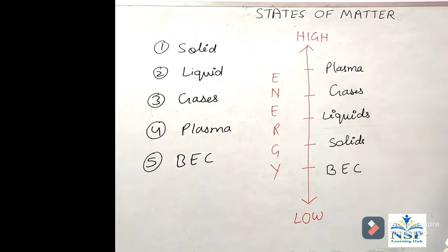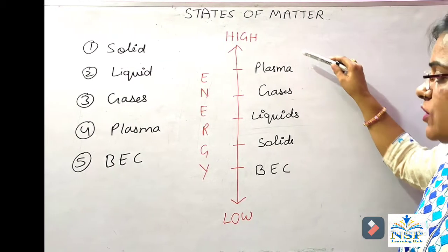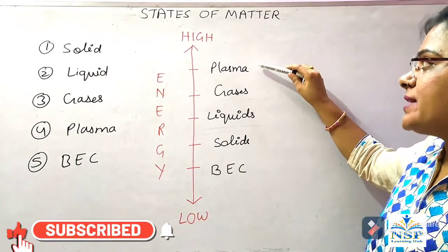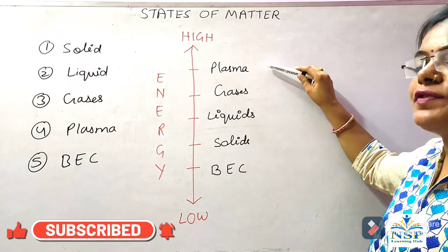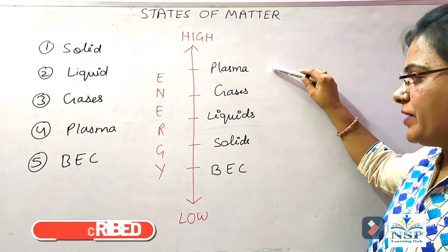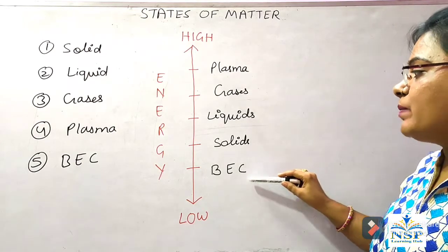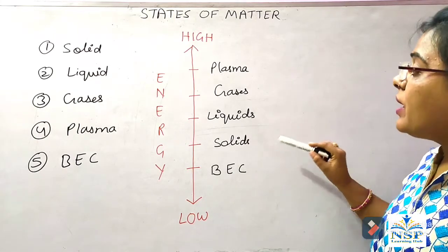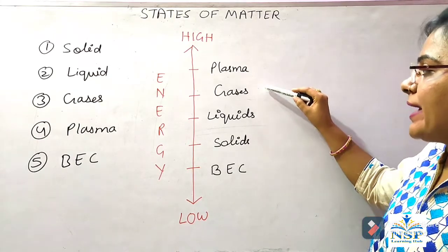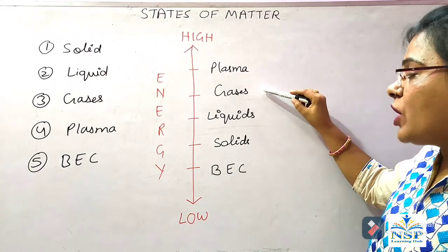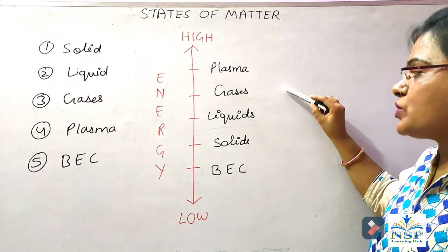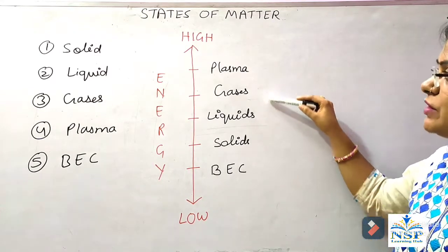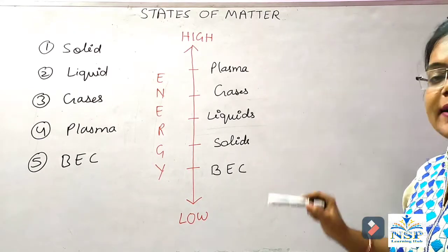Students, as we know about the energies of these states of matter, the highest energy has plasma because of charged particles present in it. And least energy in Bose-Einstein condensate because of its rigid nature. Solid, liquid, and gas are in the middle because of the inter-particle force, which causes different energy levels in these states.